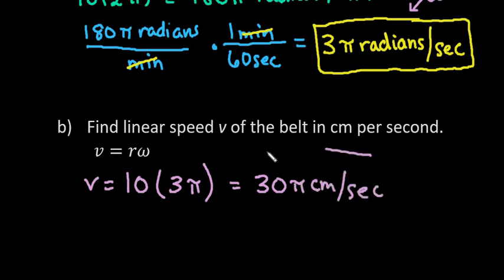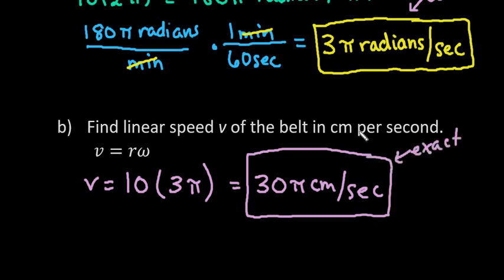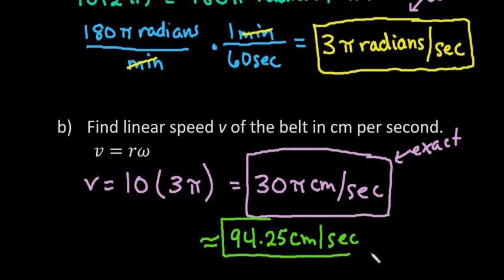So if you wanted an exact answer, this would be our exact answer. And again, if you want an approximate, we would just multiply our 30 times π, which gives us approximately 94.25 centimeters per second. So that is the linear speed of the belt is 94.25 centimeters per second.